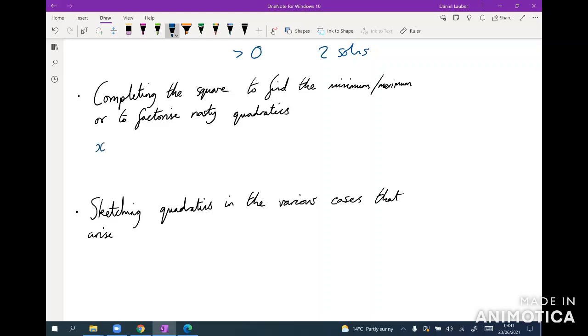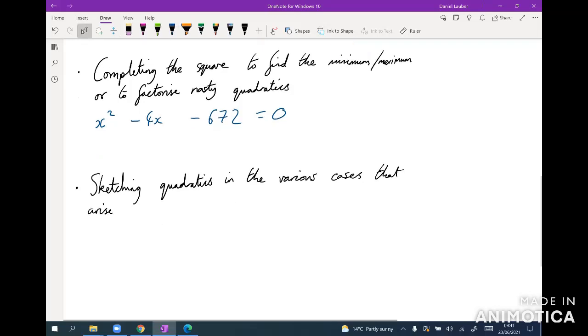So for example, I've seen things like this in the GMAT: x squared minus 4x minus, I believe it was 672, equals 0. And that is relatively nasty to factorize. So instead what we can do is use this idea of completing the square, which is where you simply take this value, halve it, and rewrite the quadratic as x minus—so in this case half of minus 4 is minus 2—so x minus 2 squared, and then minus the number squared, so minus 2 squared.